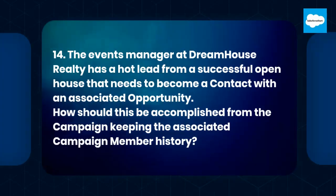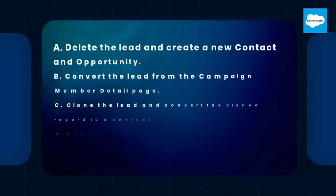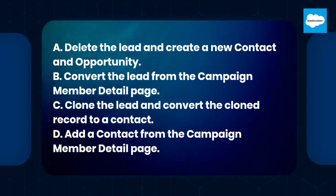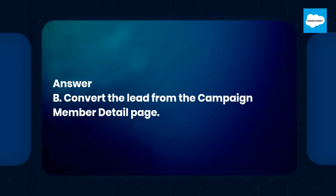Question 14. The events manager at DreamHouse Realty has a hot lead from a successful open house that needs to become a contact with an associated opportunity. How should this be accomplished from the campaign keeping the associated campaign member history? A. Delete the lead and create a new contact and opportunity. B. Convert the lead from the campaign member detail page. C. Clone the lead and convert the cloned record to a contact. D. Add a contact from the campaign member detail page. Answer: B. Convert the lead from the campaign member detail page.